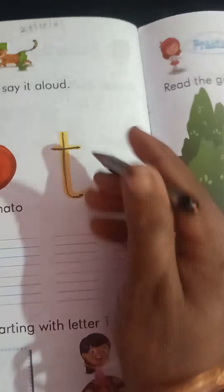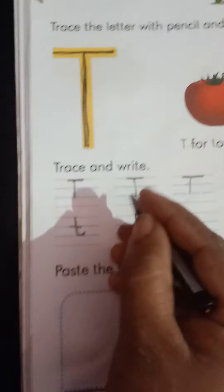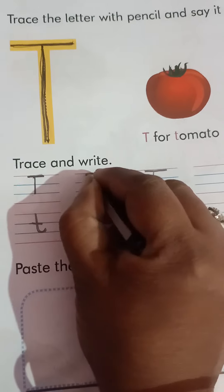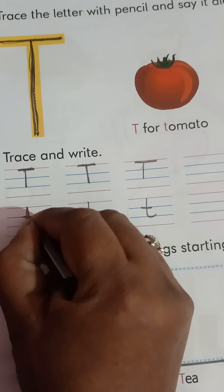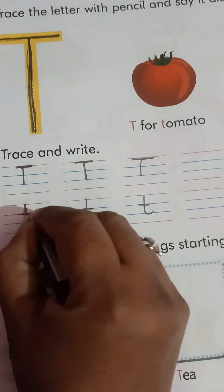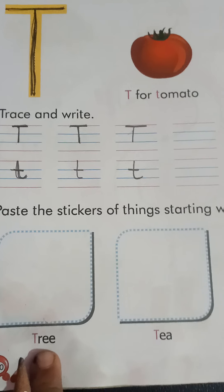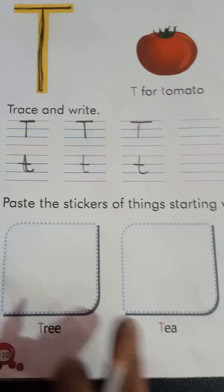Small t has a small sleeping line and one curve line. In the first row we write capital T, and in the second row we write small t. Here we paste the sticker: T for tree.